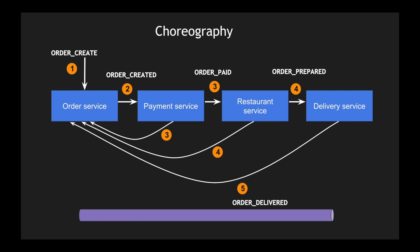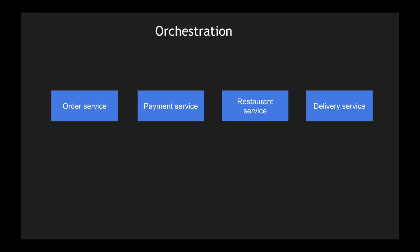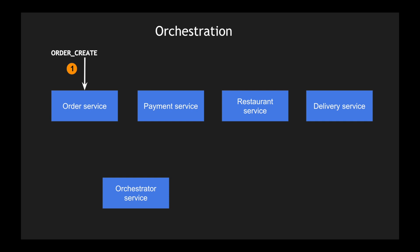This is how choreography is used to perform sagas in a microservices architecture. Now let's look at orchestration with the same set of services. In orchestration, we don't call them events — we call them commands, because it is command-based. There is a central orchestrator service that controls the flow and triggers different microservices. The first command is 'order create,' and the order service creates an order.